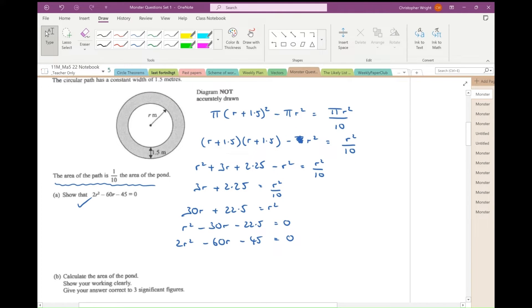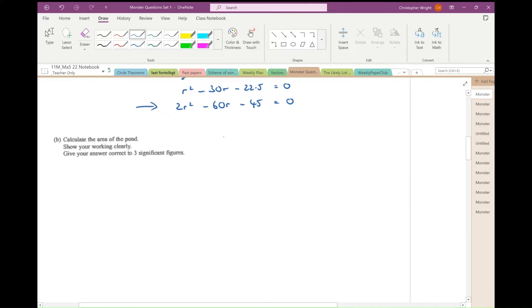Now I'm asked to calculate the area of the pond. I can find r by solving this equation. The equation is 2r squared minus 60r minus 45 equals 0. Now it tells me to give my answer to three significant figures, so there's a clue that I'm going to need to use the formula. r equals minus b plus or minus the square root of b squared minus 4ac all over 2a.